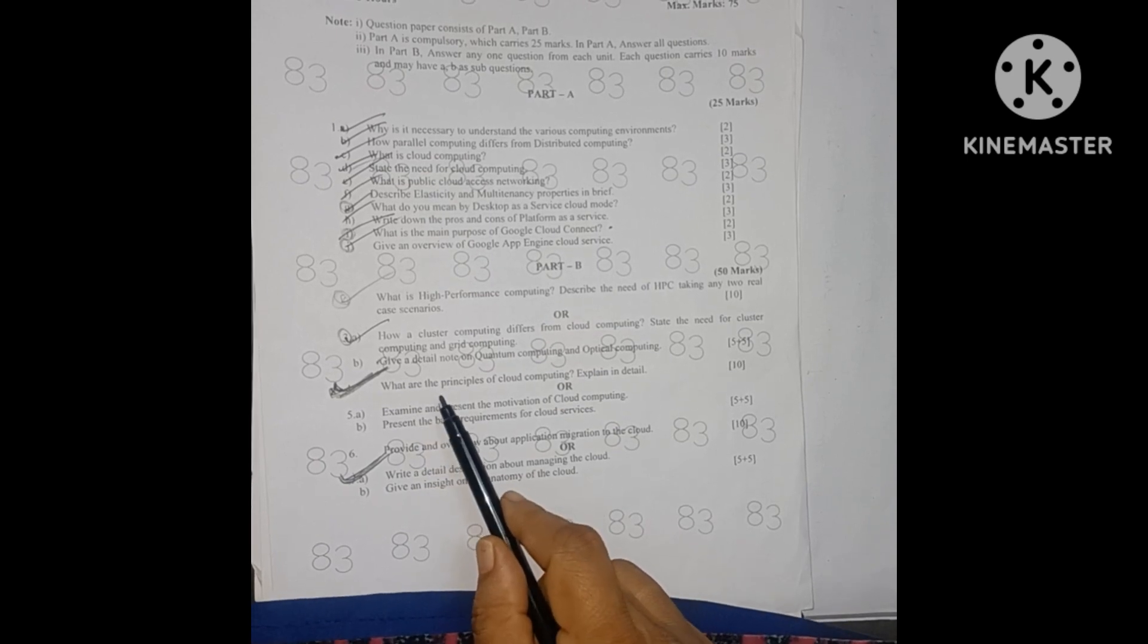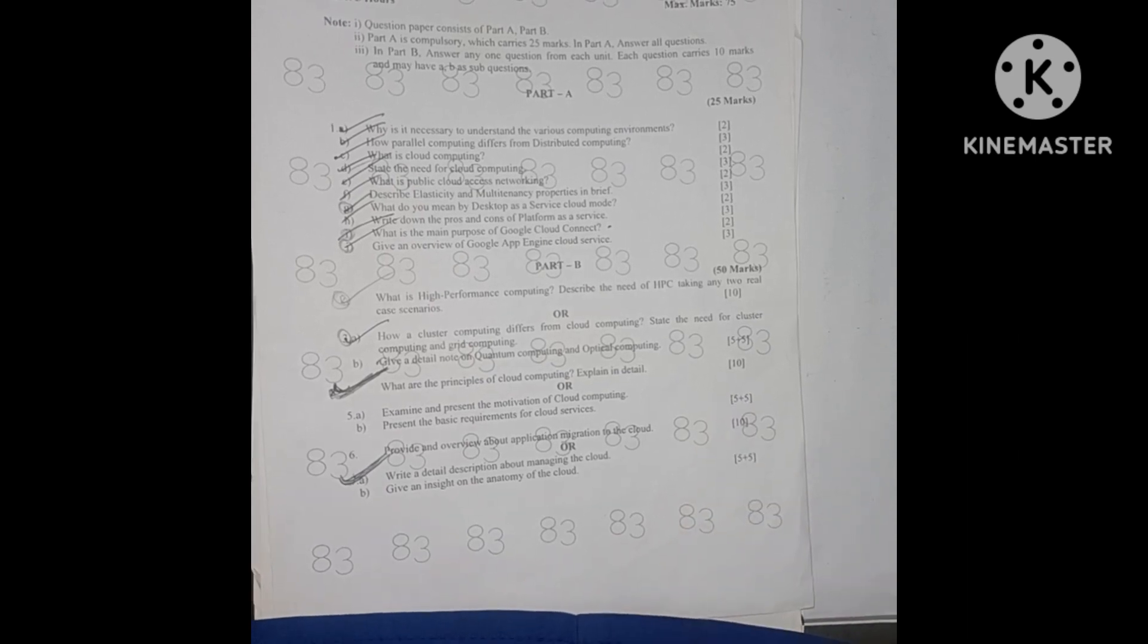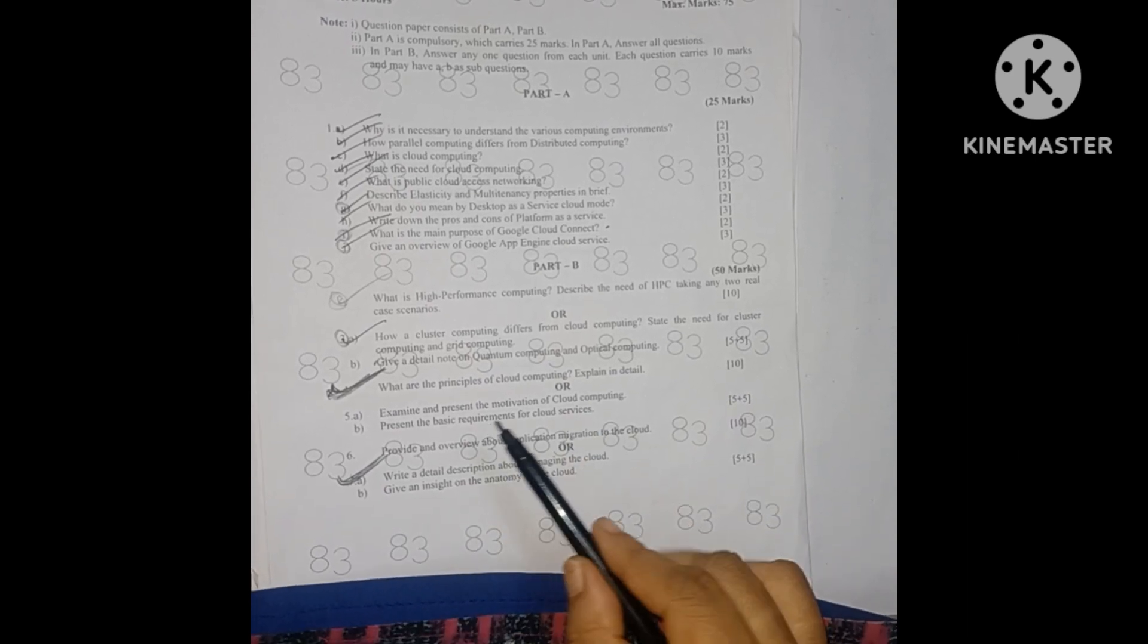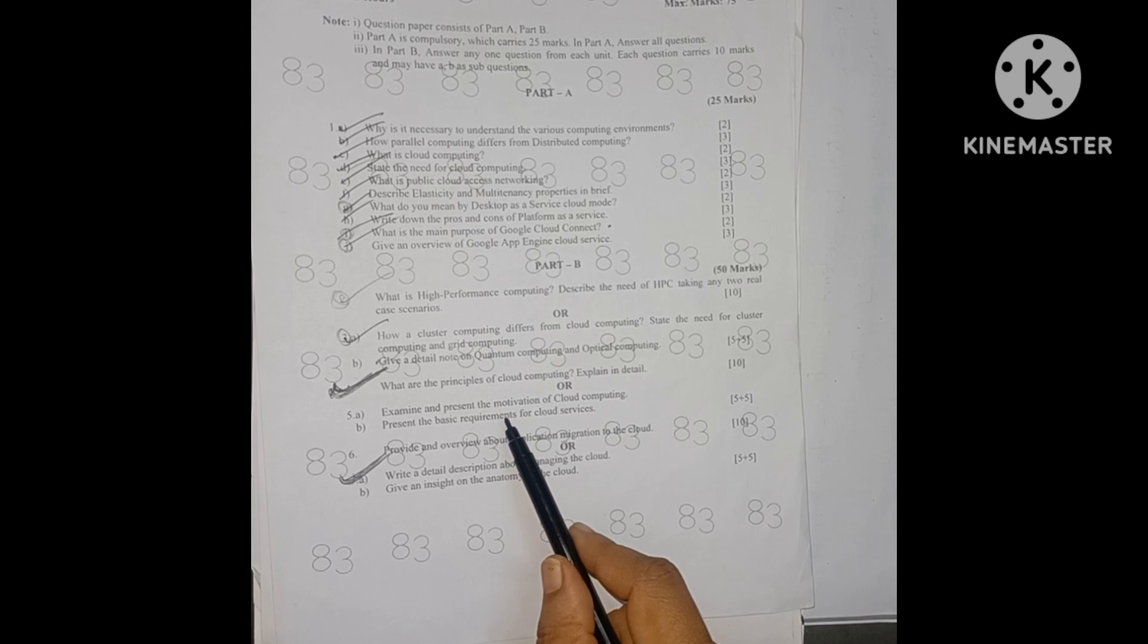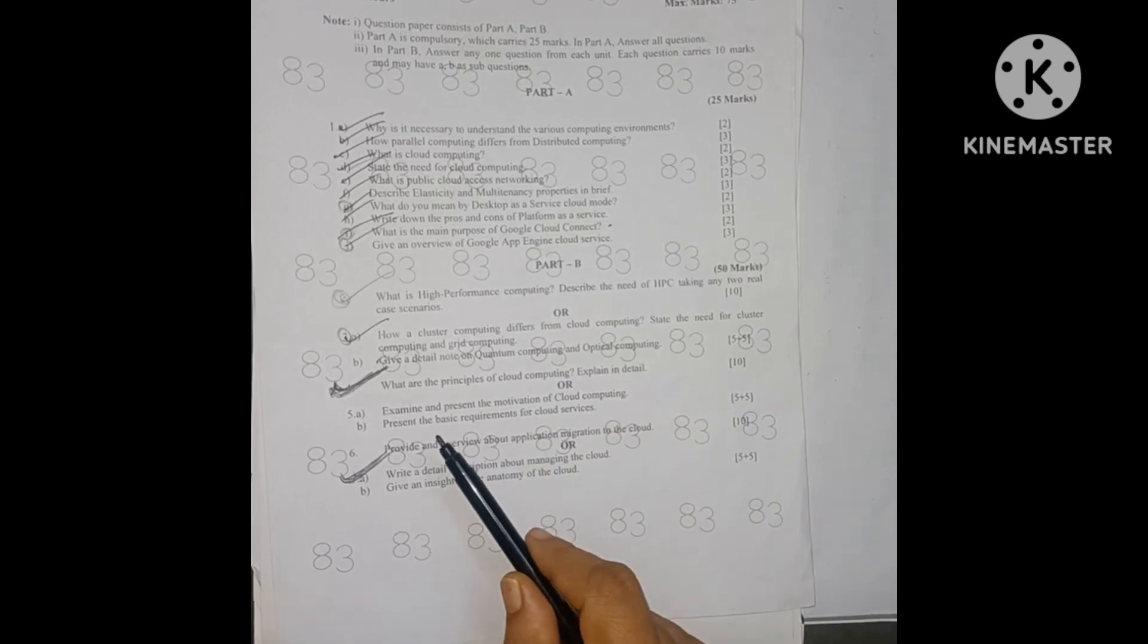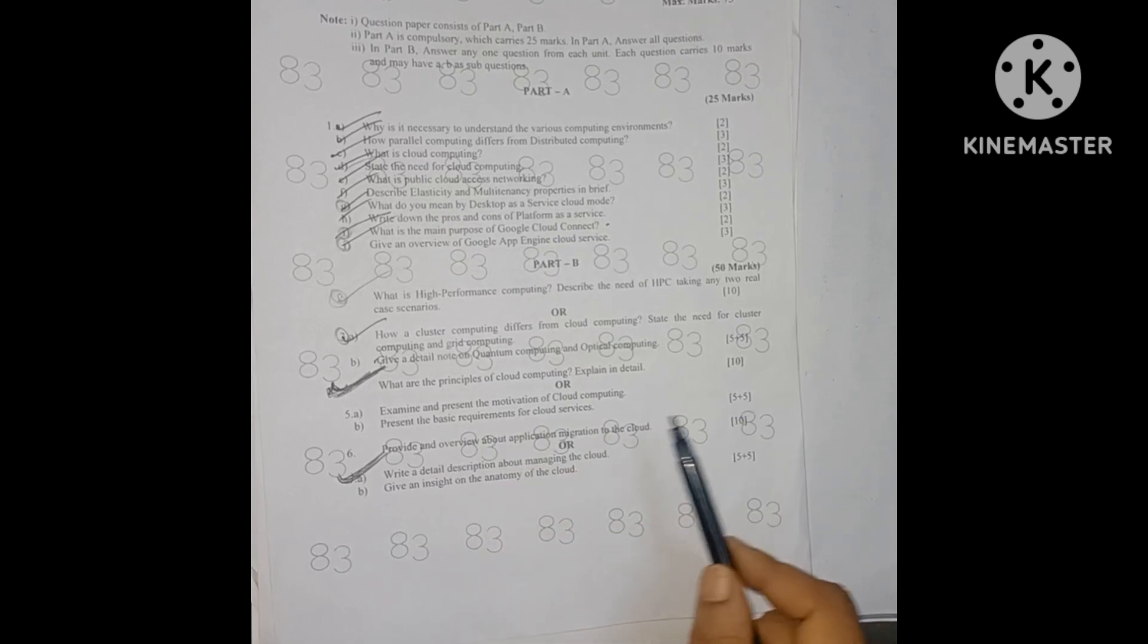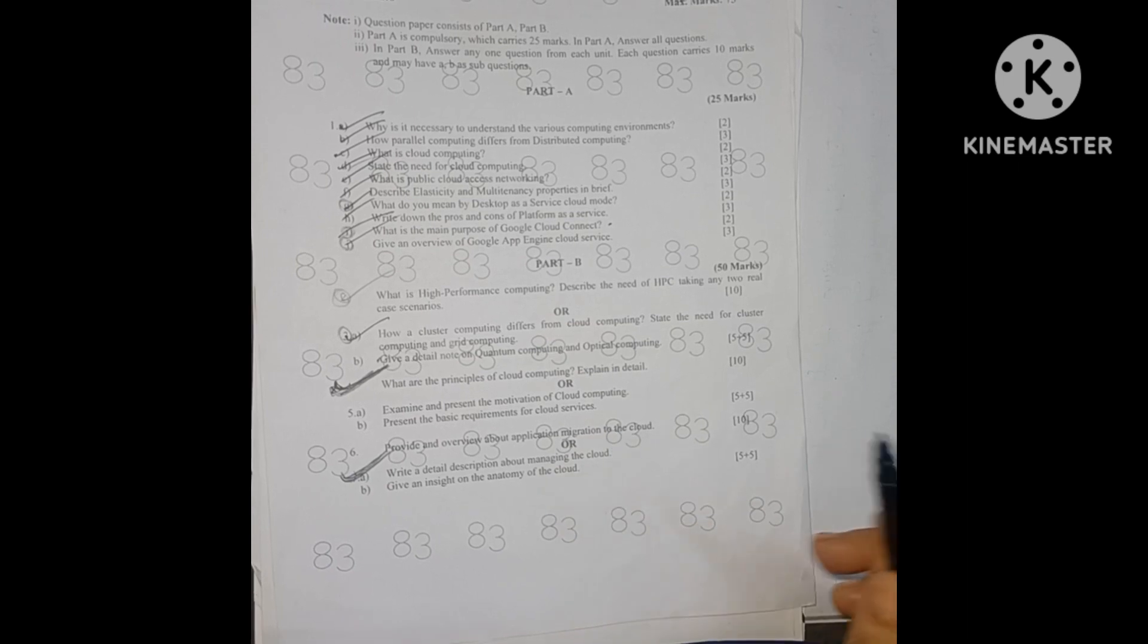Unit 2: What are the principles of cloud computing? Explain in detail, a direct 10 marks question. Or internal choice is examine and present the motivation of cloud computing, 5 marks. Part B is present the basic requirements of cloud services, 5 marks. These 2 questions are from unit 2.